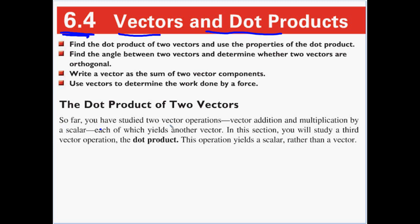So far, we've studied two vector operations: vector addition and vector multiplication by a scalar, each of which yields another vector. In this section, we're going to study a third operation called the dot product, and when we're done here, our final answer will be a scalar, not a vector.